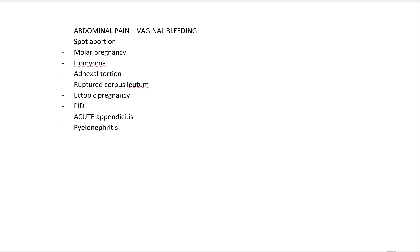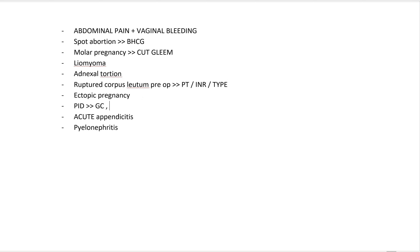The labs we order include beta HCG for spontaneous abortion, CBC since we suspect molar pregnancy, and pre-op labs — PT/INR and type and cross — any time there is a risk of surgery. For PID, we do gonococcal culture and chlamydia testing. We also order a transvaginal ultrasound.